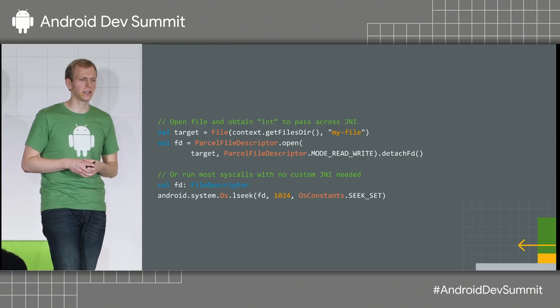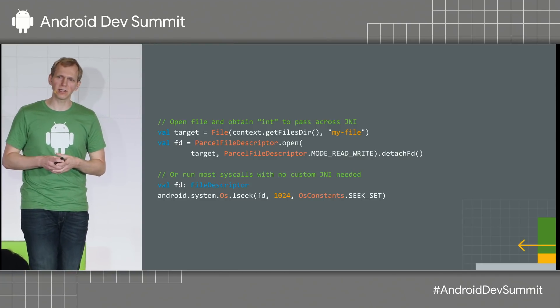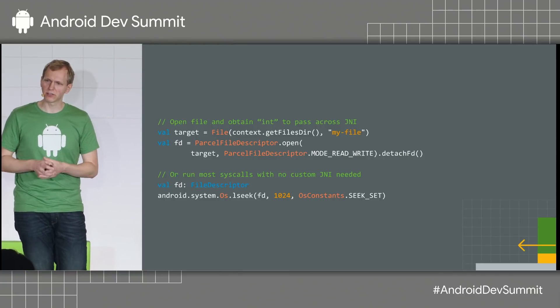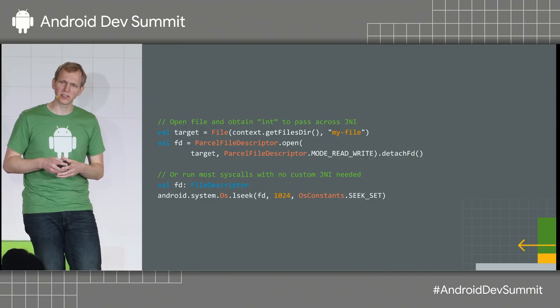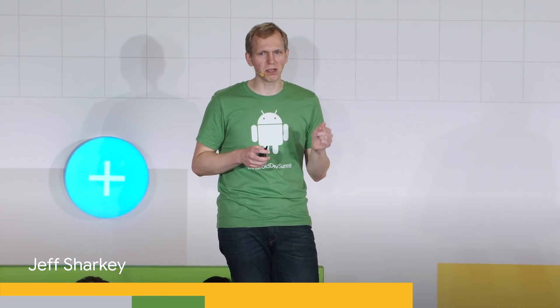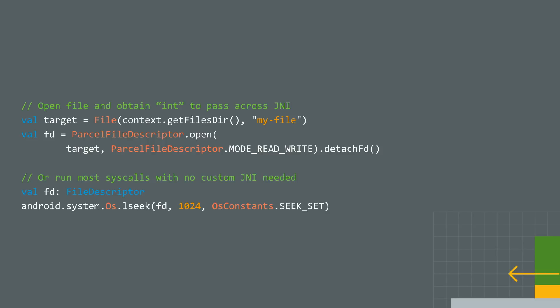Also, if you're jumping across JNI just to do a handful of system calls, look at android.system.Os — there are several dozen POSIX syscalls available from Java. We only added that a couple of releases ago, so you may be able to do those syscalls purely in Java and eliminate the JNI and native code in your application entirely.